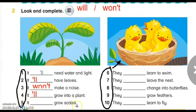Number five: It grow scales. Will it grow scales? هل سوف يكون لها قشور؟ No, so here we have to use won't. It won't grow scales. Number six, which is about this baby bird: They learn to swim. No, they won't learn to swim. Here we have to use won't.